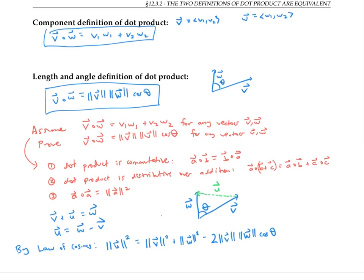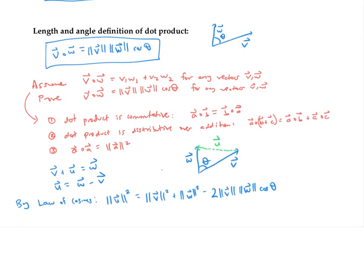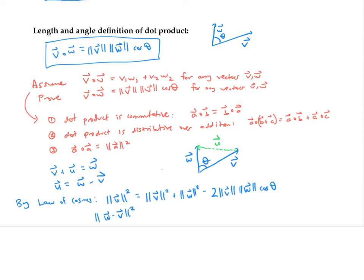If I rewrite u as w minus v, we get this equation. Now I'm going to use the fact that the dot product of a vector with itself is the norm of the vector squared, to rewrite the norm of this vector as the dot product of the vector with itself.